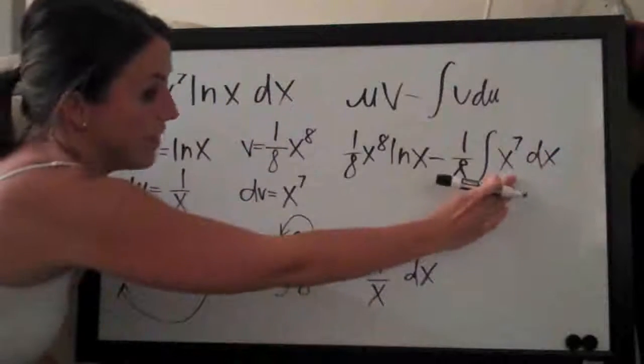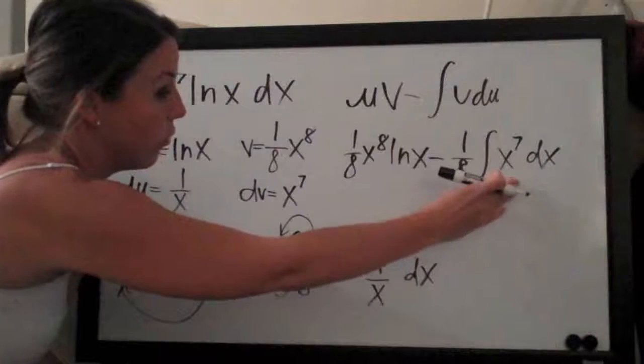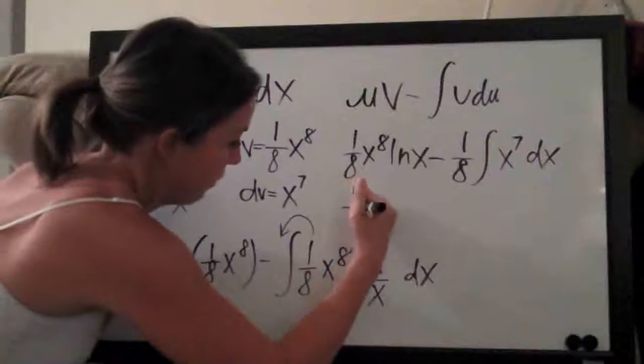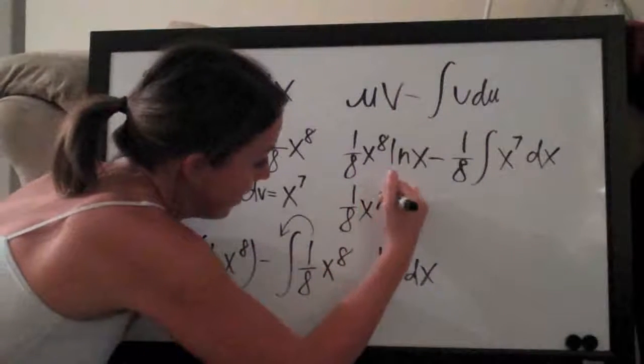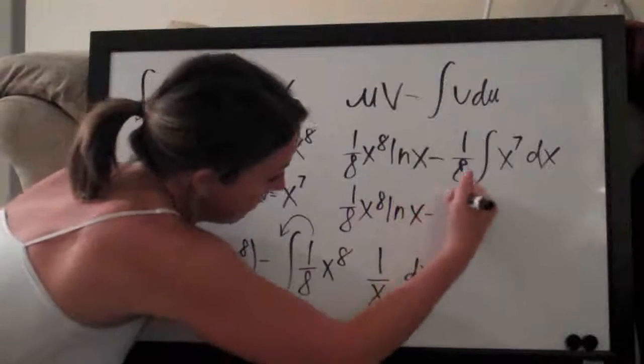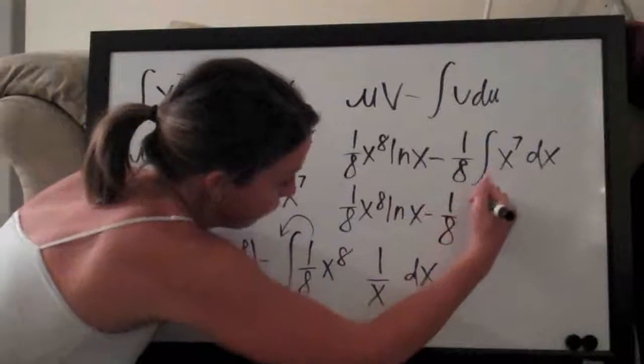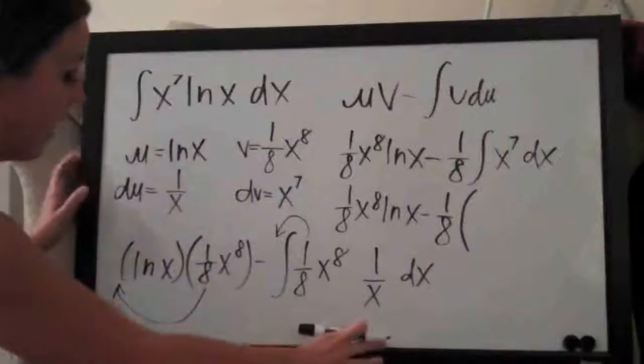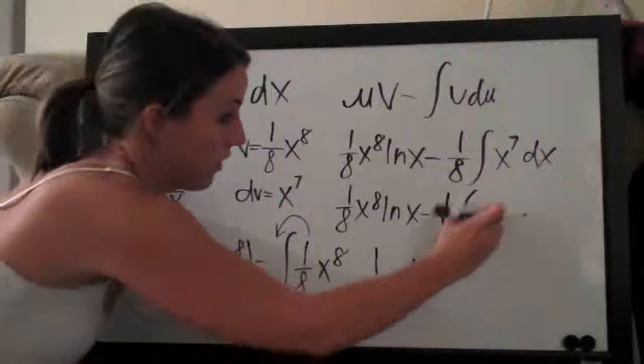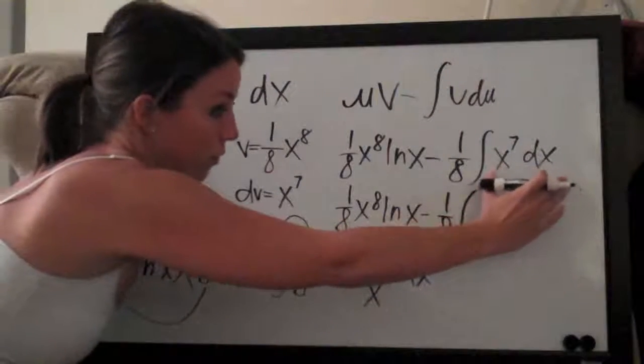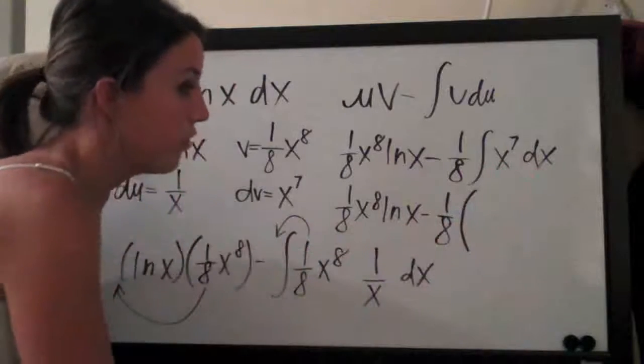Now this is something that we can easily take the integral of so we'll go ahead and do that. We'll end up with one eighth x to the eighth ln of x minus one eighth, and then I'll draw a big parenthesis to denote that this is clearly where we're starting to write down what we got when we took this integral.